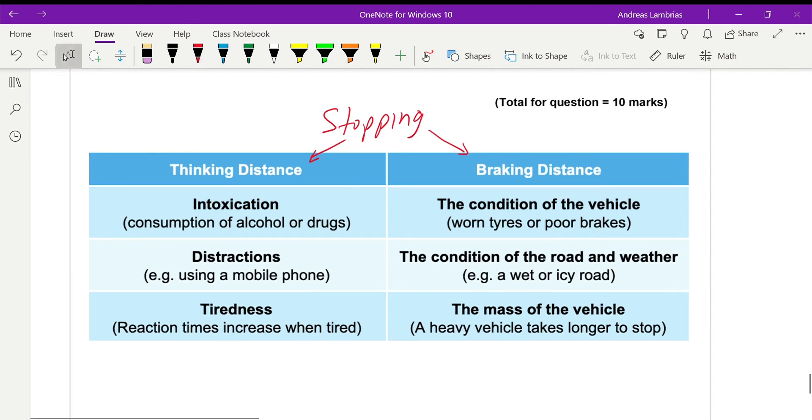You can pause the video and read this table, but in this case we're looking for braking distance. Braking distance is affected either by the conditions of the car, about the tires, about the brakes. It can be the conditions of the road if it's like a slippery road, if it's like an old dirt road. It can be affected by the weather, if it's wet, if it's raining.